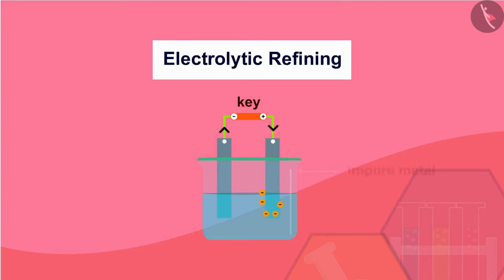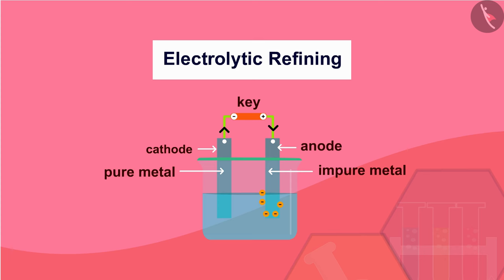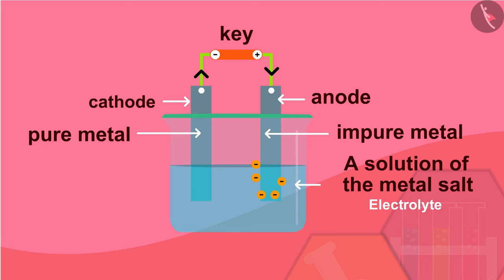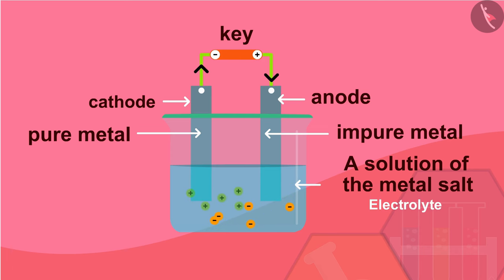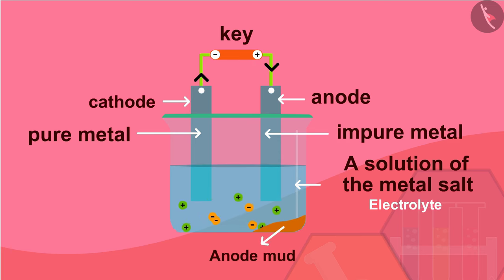In this process, the impure metal is made the anode and a thin strip of pure metal is made the cathode. A solution of the metal salt is used as an electrolyte. The apparatus is set up as shown in the diagram on screen. On passing current through the electrolyte, the pure metal from the anode dissolves into the electrolyte, and an equivalent amount of pure metal from the electrolyte is deposited on the cathode. The soluble impurities go into the solution, whereas the insoluble impurities settle down at the bottom of the anode and are known as anode mud.